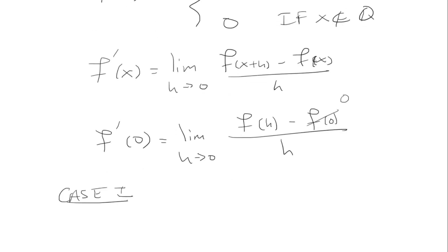So case 1, if h is rational, that means that f of h would just be h squared. So then f prime of 0 will be the limit as h approaches 0 of h squared over h, which is the limit as h approaches 0 of h. And we know that's just 0.